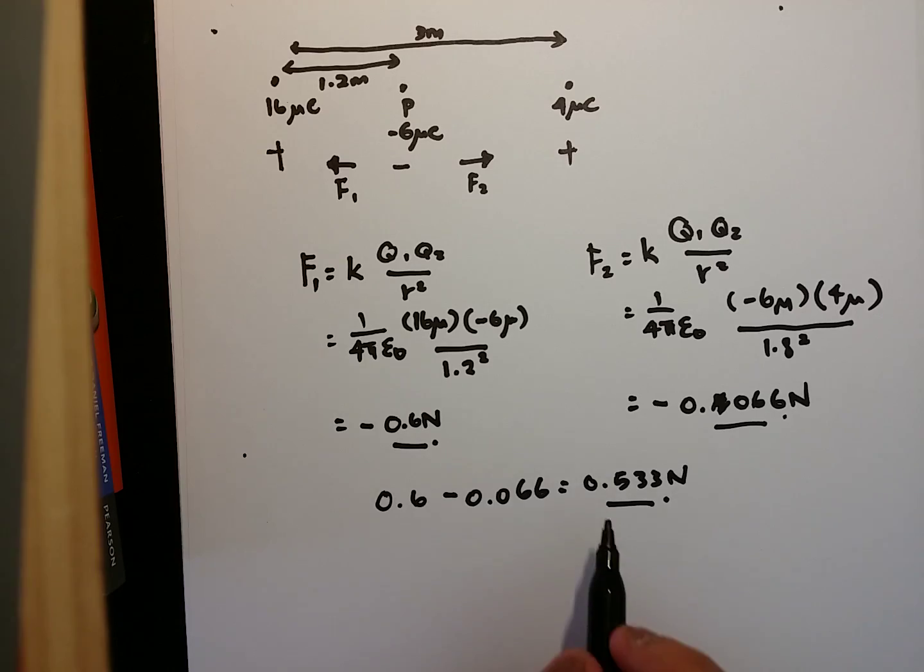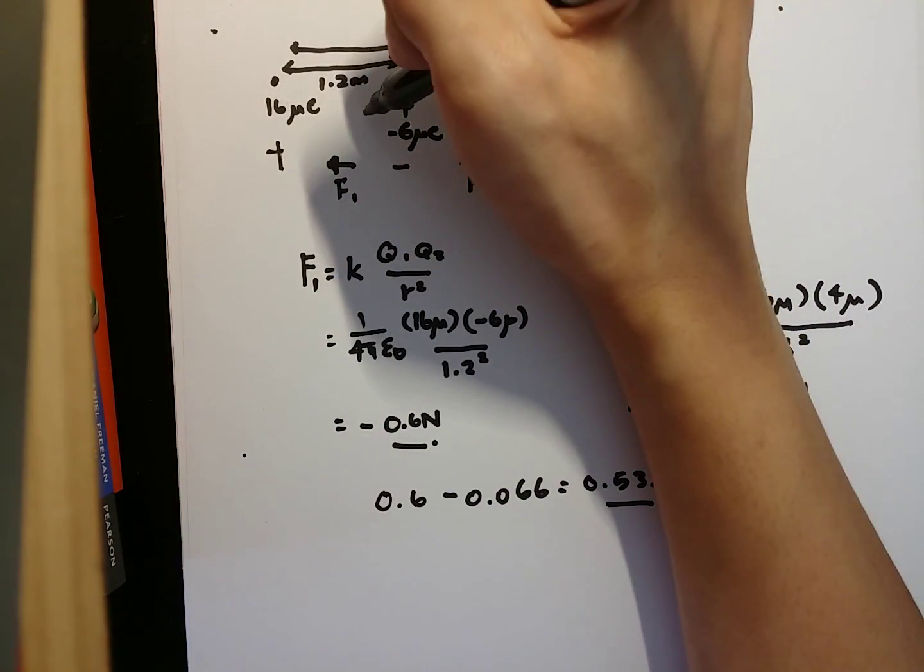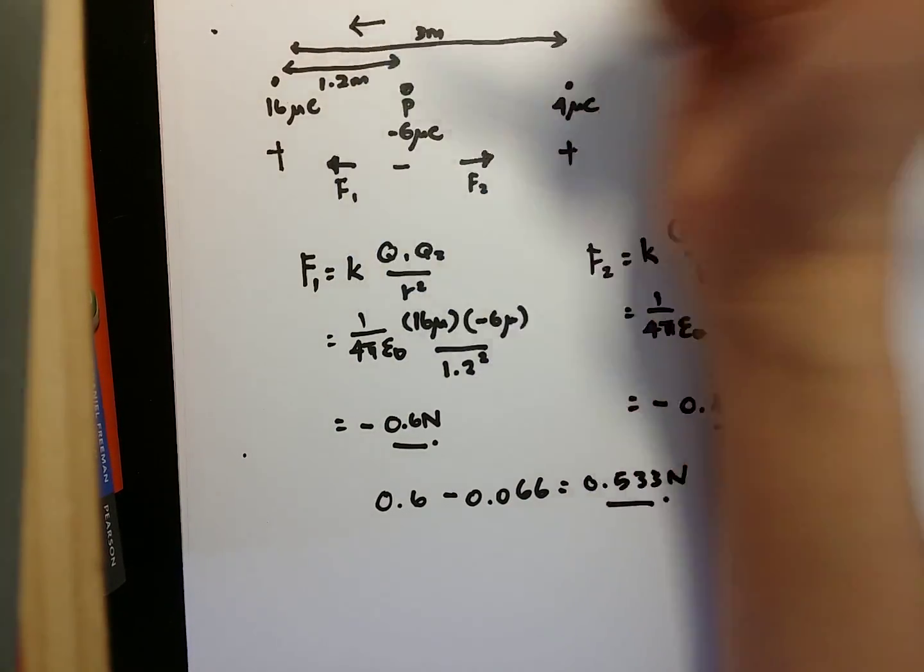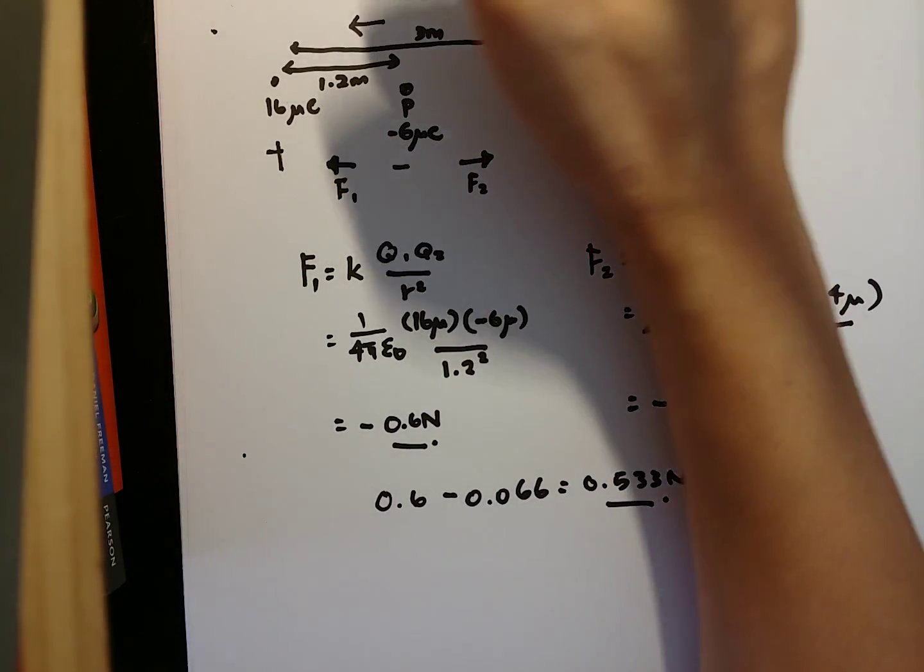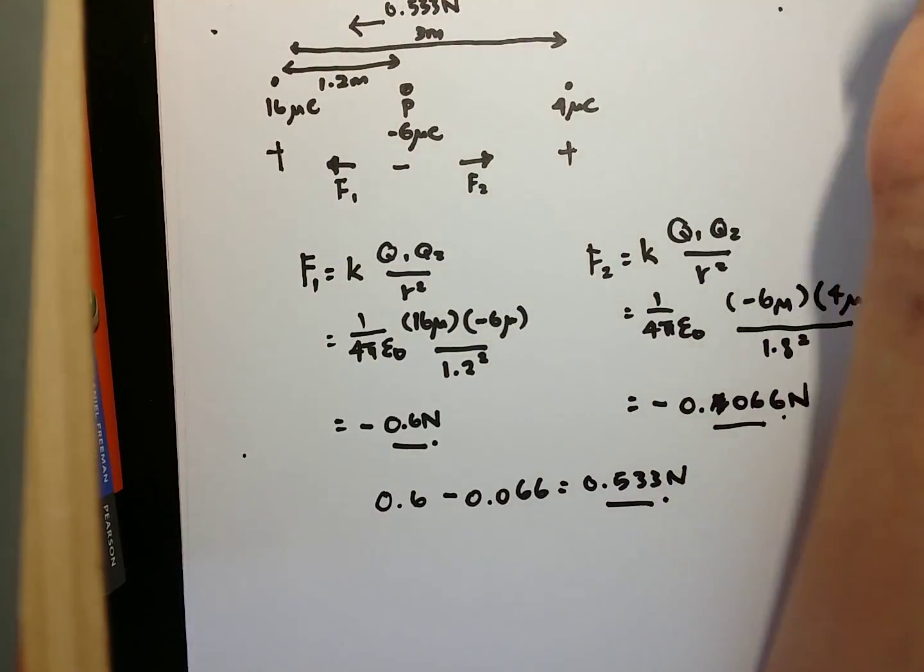That means that this particle of P is now attracted towards the left at a resultant force of 0.533 newton.